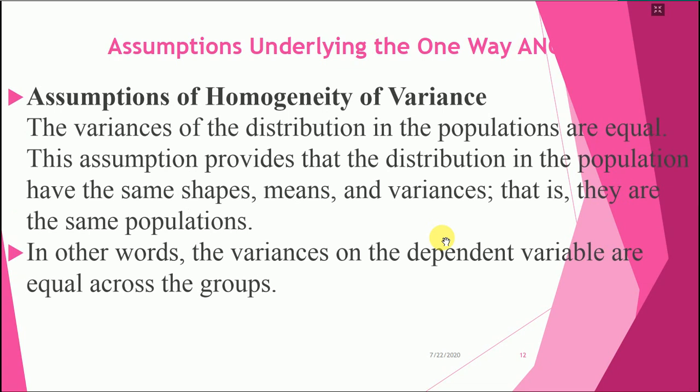The third assumption is homogeneity of variance. The variances of the distributions in the populations must be equal. This assumption provides that the distributions in the population have the same shapes, means, and variances — that is, they are from the same population. The variances on the dependent variable must be equal across all groups. If you have four or five groups, the sample variance should be equal — it should be homogeneity.